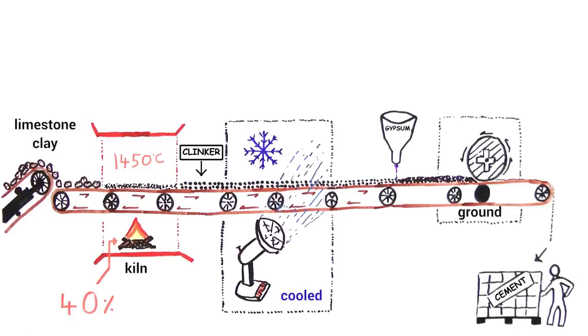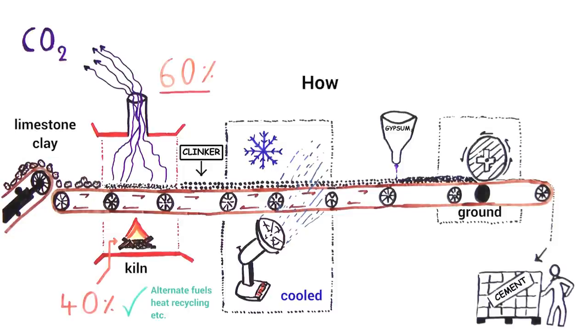40% of CO2 emissions come from burning the fuels needed for the kiln. The efficiency of this manufacturing process is already optimized in most modern cement plants. But we can act on the 60 remaining percent of CO2 emissions, which come straight from the decomposition of the limestone.